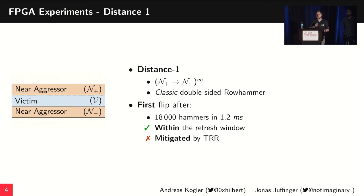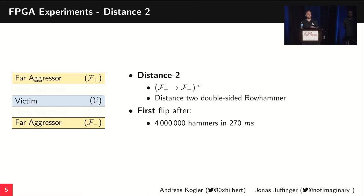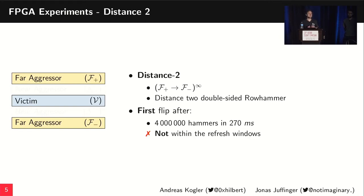In the second experiment, we just moved this double-sided hammering pattern out by one row — we're now hammering the far aggressors — and again measured the time it takes to inject a bit flip. We see that we need around 4 million accesses over 270 milliseconds of constant hammering. This is way too large to fit into any refresh window used on modern devices.